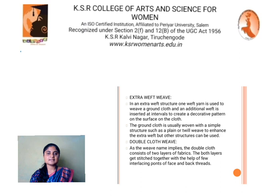Double cloth weave. As the weave name implies, the double cloth consists of two layers of fabrics. Both layers get stitched together with the help of few interlacing points of face and back threads.